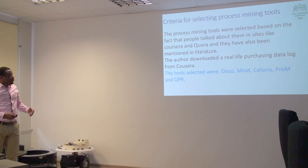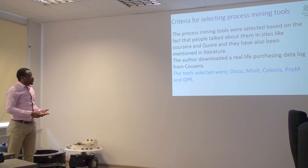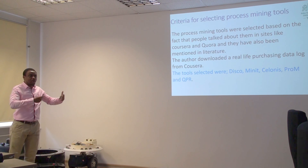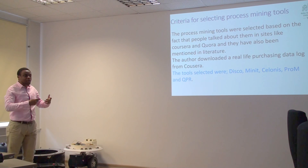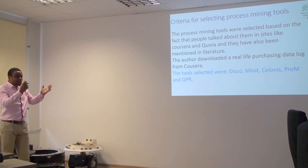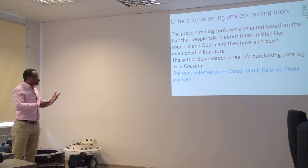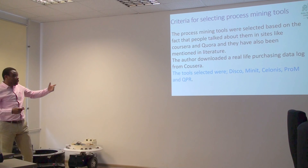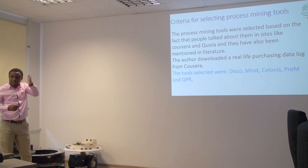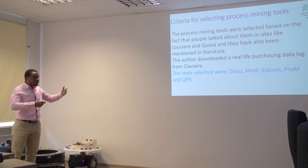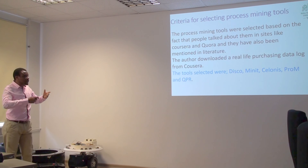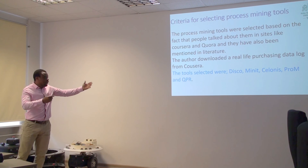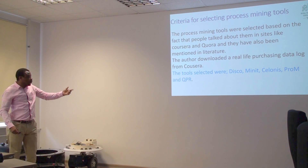The criteria I used in selecting these tools came from business sites and forums where I saw people talking about specific tools — how they are used in industry and how popular they are. I also read literature, which helped me streamline the number of tools I focused on. I also contacted some experts in the industry who told me that if I really want to understand process mining, I should take a course on Coursera. There is a course called Process Mining: Data Science in Action on Coursera. One of the vendors was kind enough to give us live data on a purchasing scenario, which I downloaded and used. At the end of the day, I selected five tools: DISCO, Minit, Celonis, PROM, and QPR.